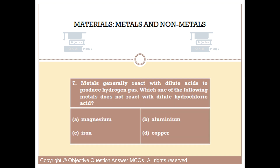Question number seven. Metals generally react with dilute acids to produce hydrogen gas. Which one of the following metals does not react with dilute hydrochloric acid? Option A: Magnesium. Option B: Aluminium. Option C: Iron. Option D: Copper.